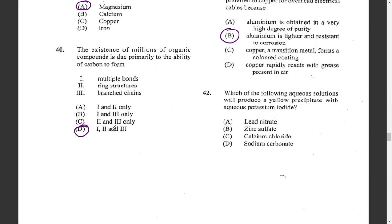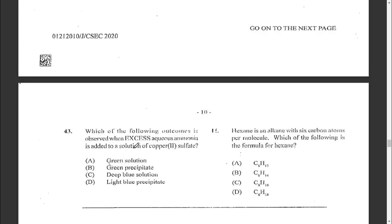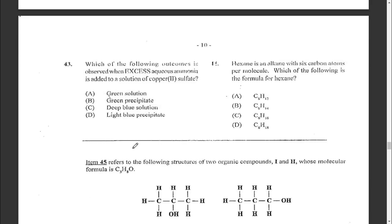Question forty-two: which aqueous solution will produce a yellow precipitate with aqueous potassium iodide? From qualitative analysis, the answer is lead nitrate.